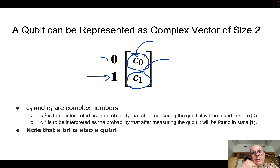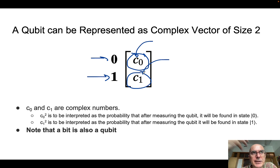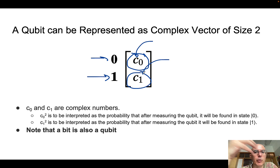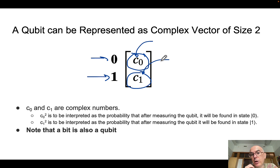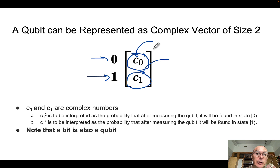So this is very different from the classical case where we express probability as a real number. For instance, we use 0.1 to say that the probability is 10% of measuring a certain thing. We are not using real numbers here — we are going to use a complex number. So this is important for all the course: we're going to represent our quantum system using arrays, vectors, matrices, or complex numbers.